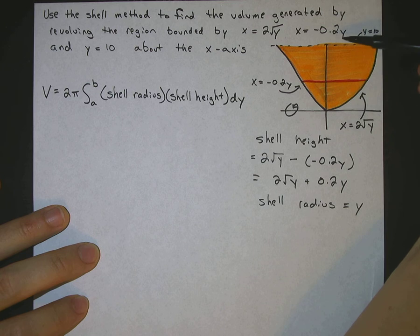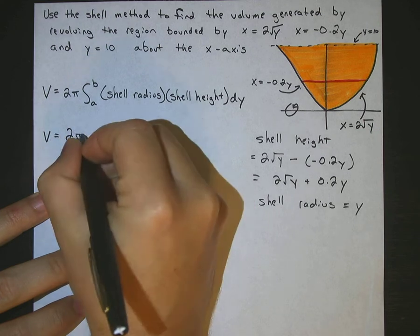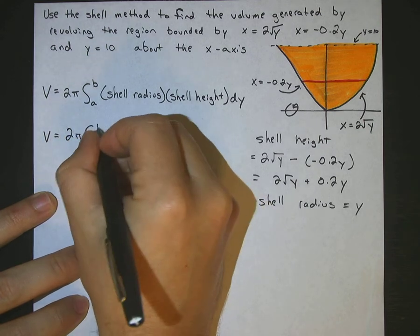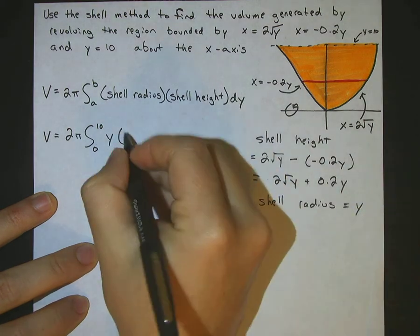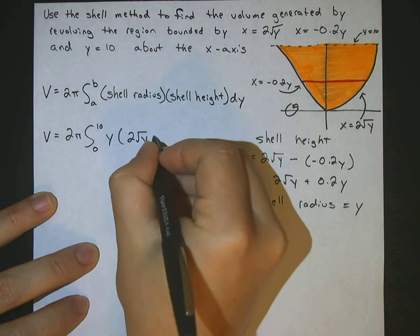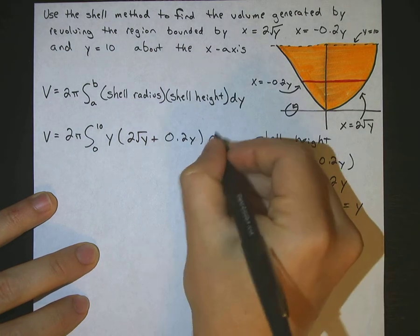The bottom is 0. The upper part of that region is 10. So our limits will be 0 to 10. So our volume is equal to 2 pi times the integral from 0 to 10. Our shell radius is y.